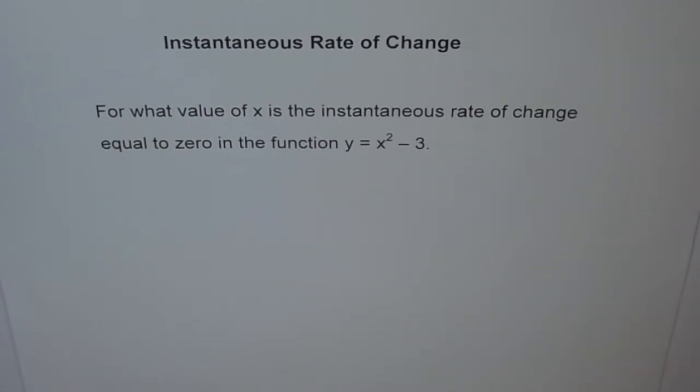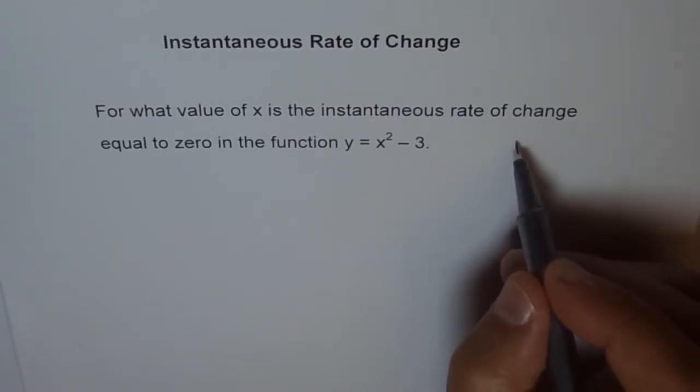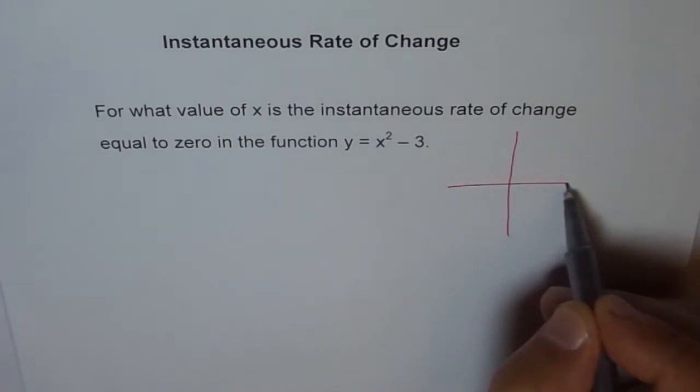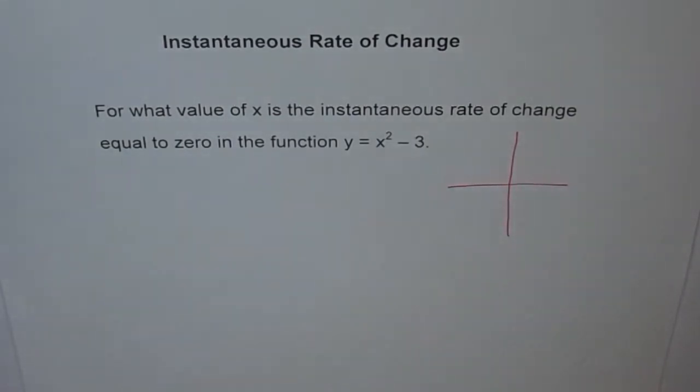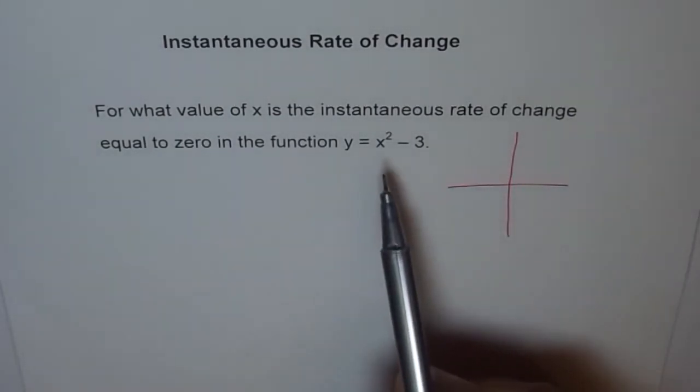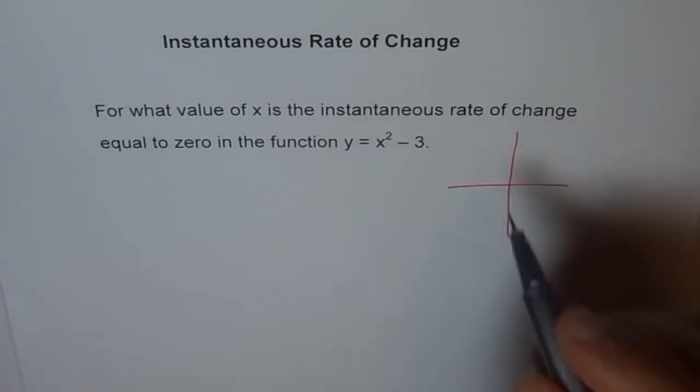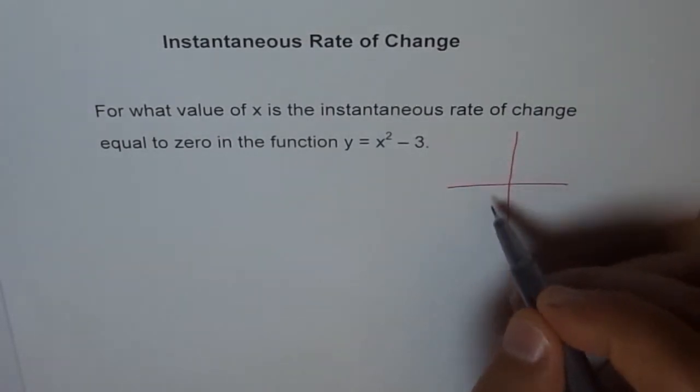To give you some idea, we can actually sketch this function, and then we will have a fairly good idea about the answer. This is a coordinate system, and if you want to sketch this function x squared minus 3, there is a parabola which has shifted 3 units down.